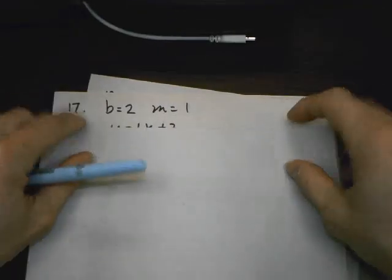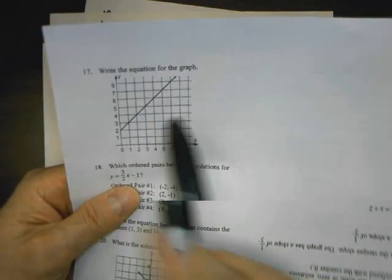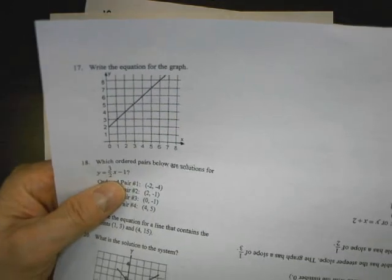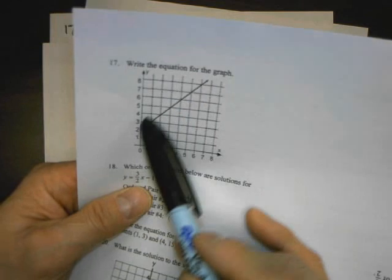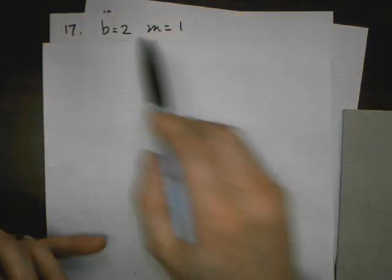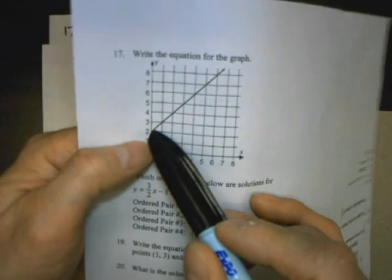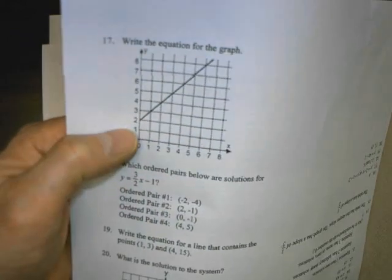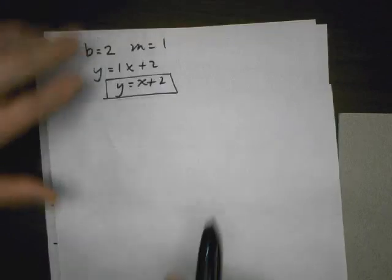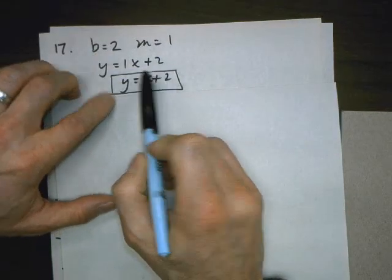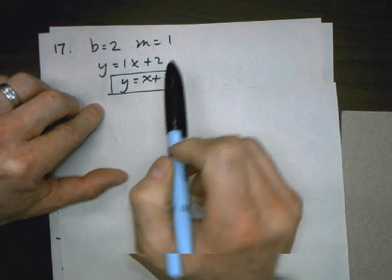Number 17: they give us a graph and ask for the equation. It's not proportional, so no shortcut. The line hits the y-axis at 2, so b equals 2. Taking any two points, I rise 1 and run 1, so the slope is 1. Slope in front of x, y-intercept as the constant: y equals 1x plus 2, which simplifies to y equals x plus 2.